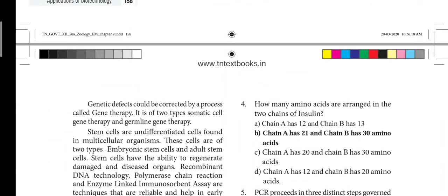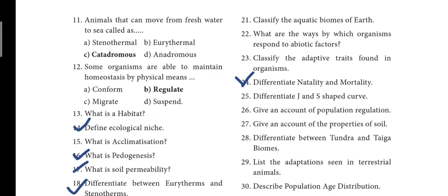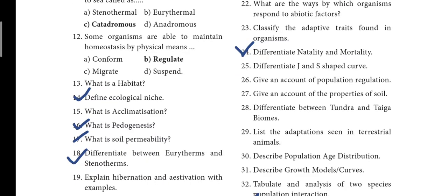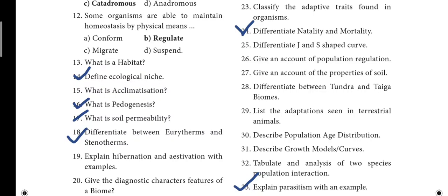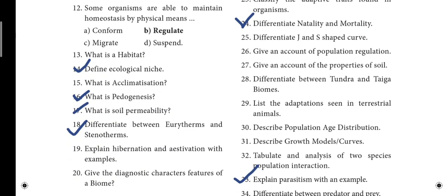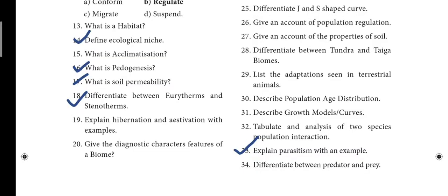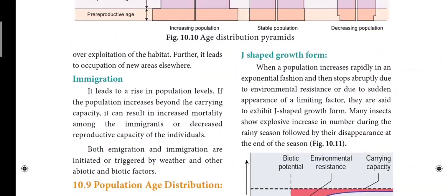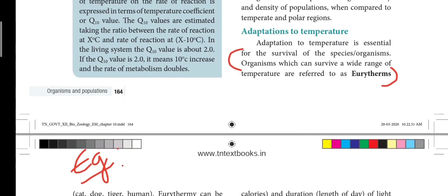Next, Lesson 10 book-back questions: 14th question — define ecological niche. 16th question — what is phytogenesis? It's a two-mark question. 33rd question — explain parasitism with an example. These are the book-back questions for Lesson 10. Now moving on to book-inside.